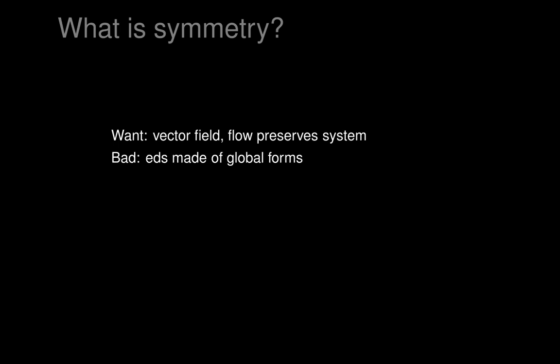The problem with this definition is that the exterior differential system is a global object — it's an ideal of differential forms that have to be globally defined on the entire manifold. So there's a problem when we want to work locally, because if we construct a vector field, it might not have a global flow. Vector fields only have flows defined on small open sets in general. So how do we make sense out of preserving an exterior differential system along the flow, when the flow isn't globally defined? Finding symmetries would require global information, which might be difficult to get.